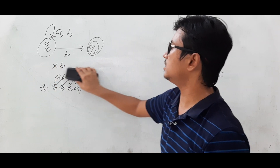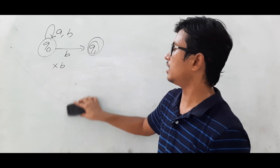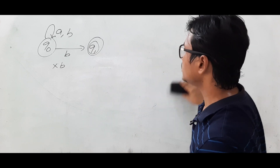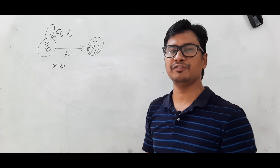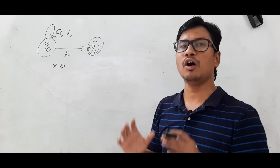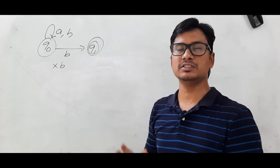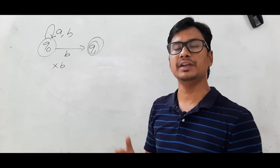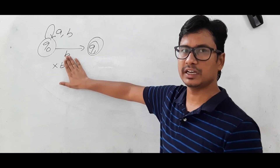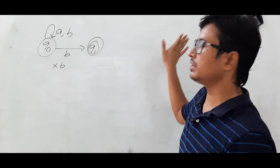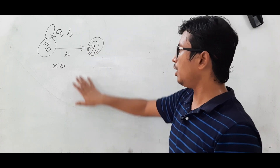This NFA accepts strings which are ending with B. Now I want to find the equivalent DFA which will also accept exactly those strings — all strings ending with B. Whatever the language it is accepting, the equivalent DFA should also accept it.